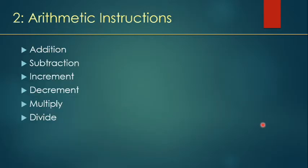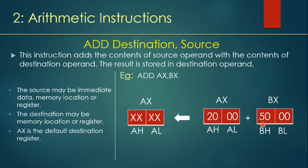Next are arithmetic instructions: addition, subtraction, increment, decrement, multiply, and divide. Let us see each one of them. The ADD instruction takes the format: ADD destination, source. The data of the source and the destination will be added and the sum will be stored in the destination. For example, adding 2000 and 5000 gives 7000, stored in the AX register.